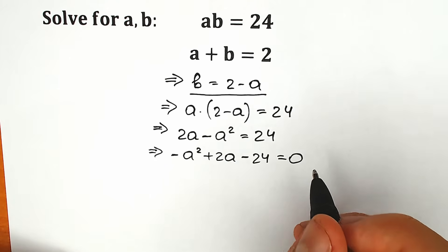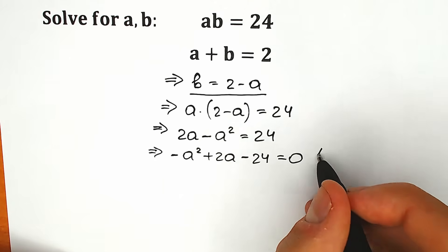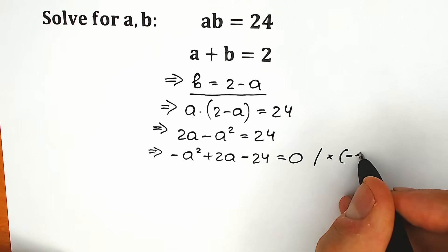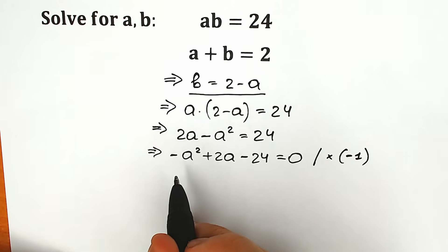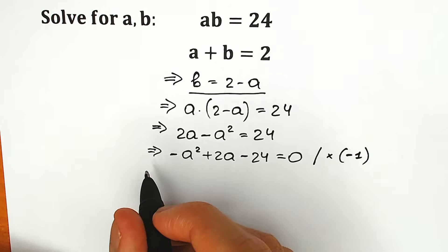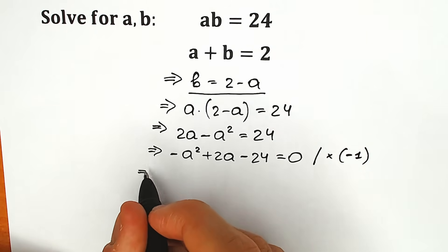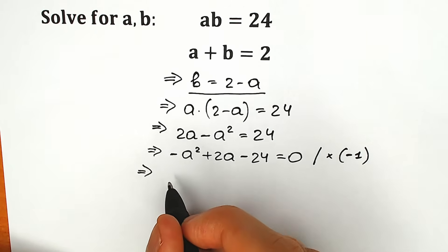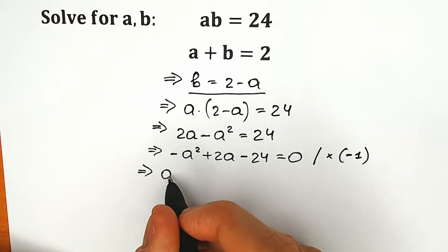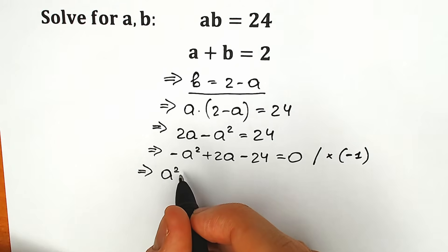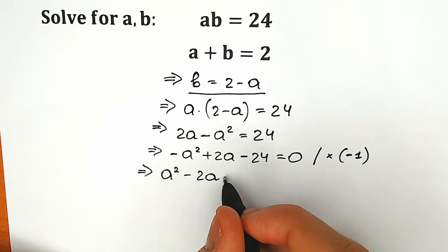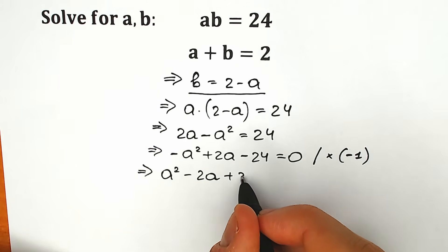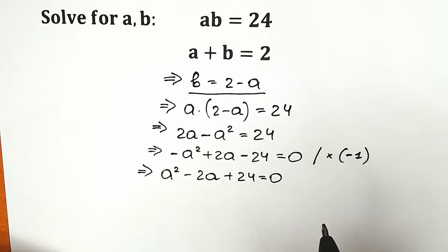The final tricky move: we're going to multiply both sides by minus one, because we don't need this minus at the beginning. We multiply both sides by minus one and change all the signs. So we have a squared minus 2a plus 24 equal to zero.